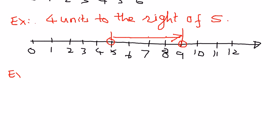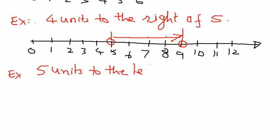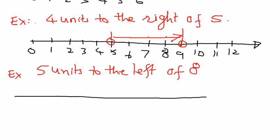Let's take another simple example. This time we want to identify a number on the number line and represent a number to the left of it. Let's say we want to represent 5 units to the left of 8. Let me write this: 5 units to the left side of the number 8. We do the same thing — we draw the number line first.